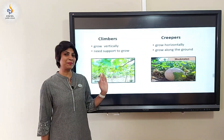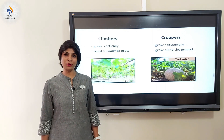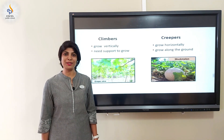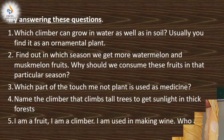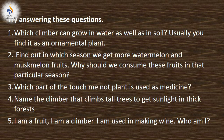I am sure you must be thorough with the concept. I want all of you to observe a few creepers and climbers in your surroundings — you can list them or draw them in your notebook. Question number 1: which climber can grow in water as well as in soil? Usually you find it as an ornamental plant. Question number 2: find out in which season we get more watermelon and muskmelon fruits, and why should we consume these fruits in that particular season?